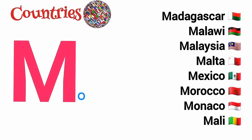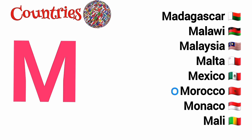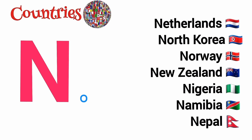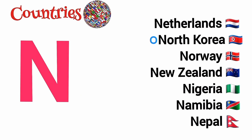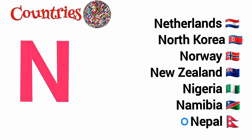M is for Madagascar, Malawi, Malaysia, Malta, Mexico, Morocco, Monaco, Mali. N is for Netherlands, North Korea, Norway, New Zealand, Nigeria, Namibia, Nepal.